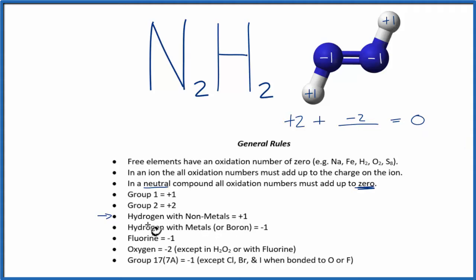So to recap, we found the oxidation number for what we knew, the hydrogens, and then we use the fact that the neutral compound, like N2H2, all the oxidation numbers add up to zero to figure out the ones that we didn't know, these two nitrogens here.